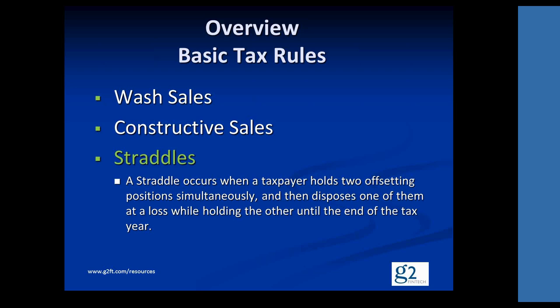Straddles were created in 1982, and they were meant specifically to avoid situations where people were — and this frequently occurred in the commodity space — buying and selling two different futures contracts on the same underlier with an attempt to generate losses on one and gains on the other. They would then recognize the losses but not the gains, and then rehedge the position once the calendar year was closed out.